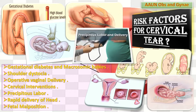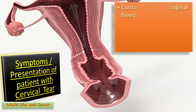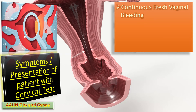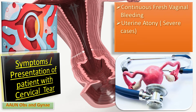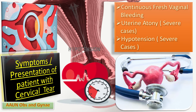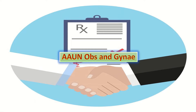What are the symptoms or the presentation of a patient with cervical tear? First of all, the patient may present with continuous fresh vaginal bleeding with no vulval or vaginal tear identified. Secondly, in severe cases, uterine atony may be present, or the patient may develop hypotension. Cervical tear is potentially life-threatening if it remains undiagnosed and is not treated timely.